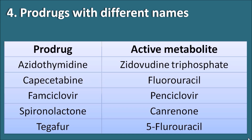Now, prodrugs with completely different names: zidovudine is a prodrug whose active metabolite is zidovudine triphosphate, an anti-HIV agent. Both the prodrug and its active metabolite can be used as drugs individually. Similarly, capecitabine is a prodrug whose metabolite is 5-fluorouracil — 5-fluorouracil can be given directly or as the prodrug capecitabine. Famciclovir has the metabolite penciclovir.